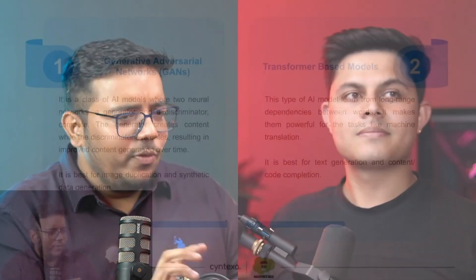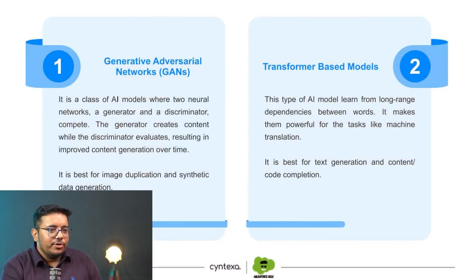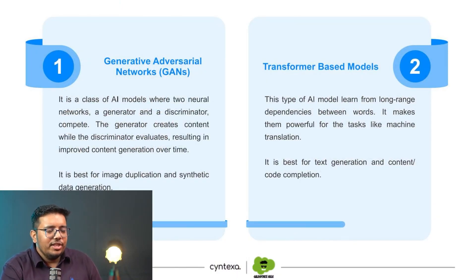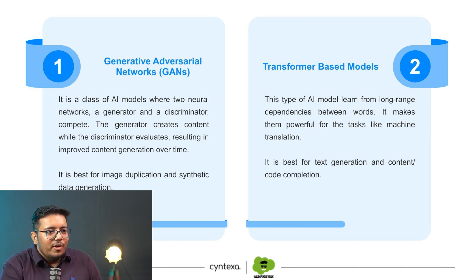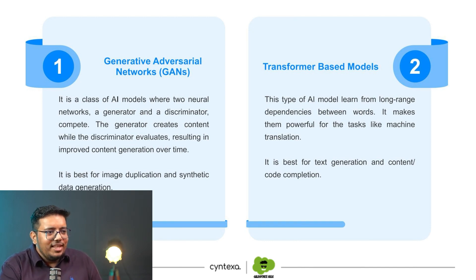Before we talk about how Generative AI works and its models, I wanted to highlight that Generative AI is not something which is just new — it has been there since the 1960s. It just got a boom in 2014 with the introduction of GANs, Generative Adversarial Networks. That was the point where Generative AI really took off.